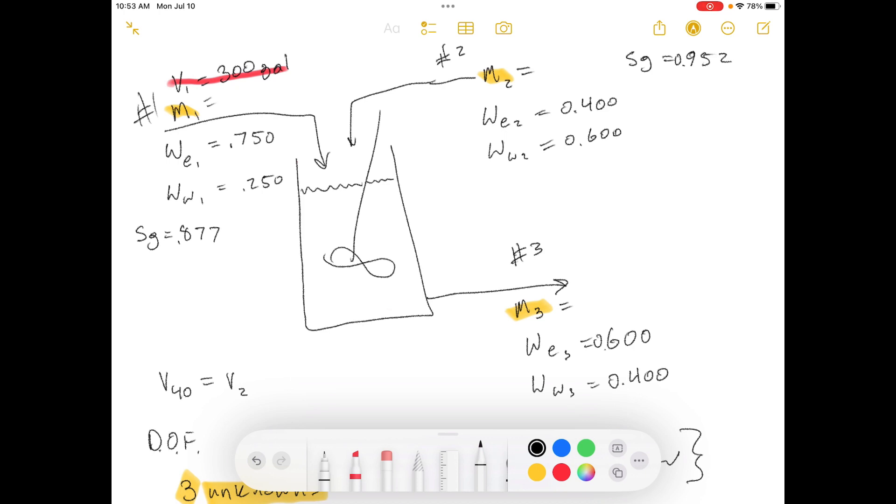Part A: draw and label a flow chart of the mixing process and do a degree of freedom analysis. Okay, so I've written down all the information here.